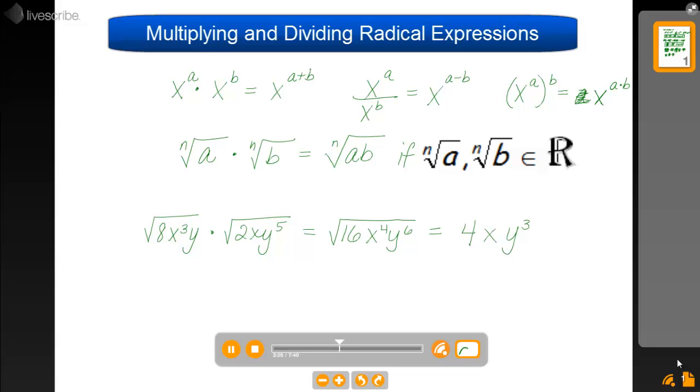I made a mistake here, sorry. The square root of x to the fourth is x squared, not x. So now let's take a look, see if we need any absolute values. We have an even index, we have even exponents.